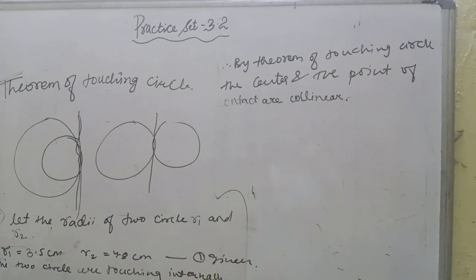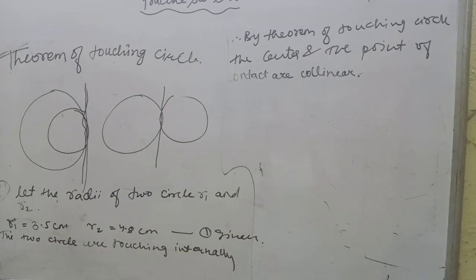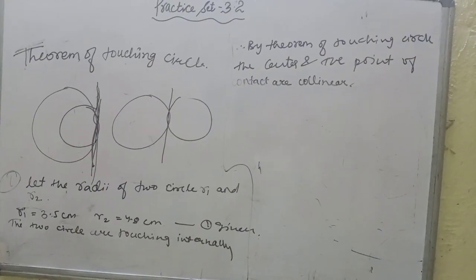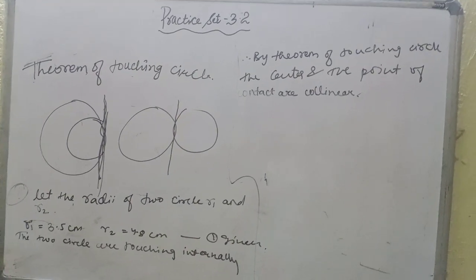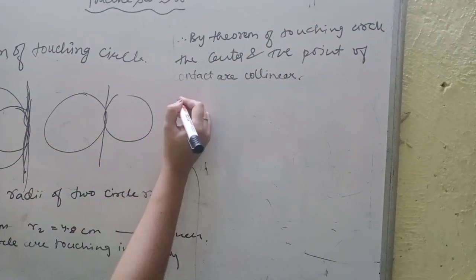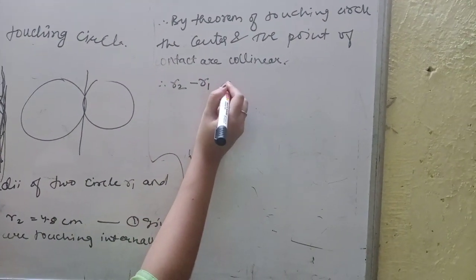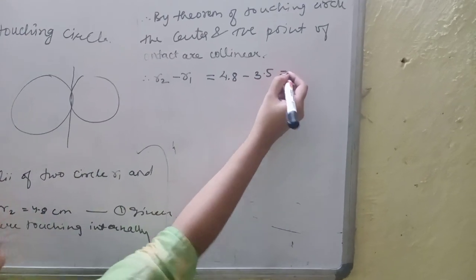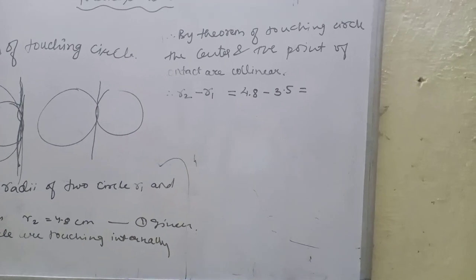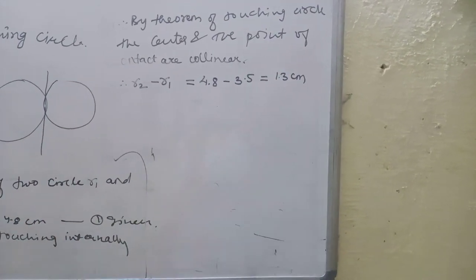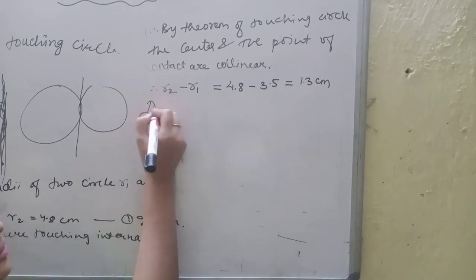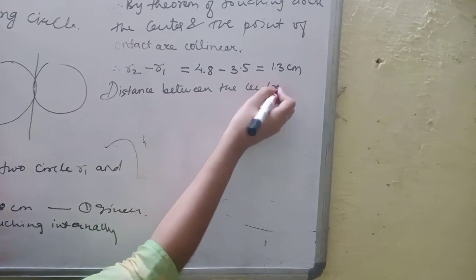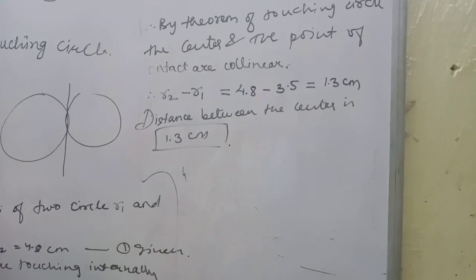So, the distance between the center of a circle touching internally is equal to the difference of their radii. This means, the internal touch between the answer is the distance to the centre. The distance between the centers is 4.8 minus 3.5, which is 1.3 cm. So, distance between the center is 1.3 cm. Understood everyone?